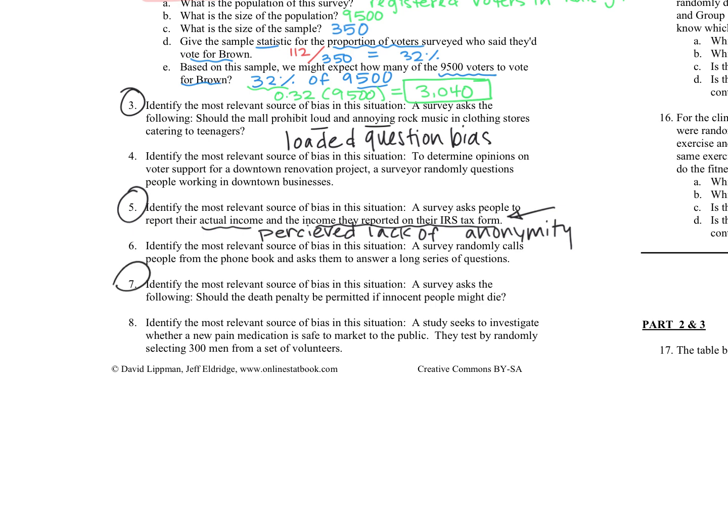For question number seven, identify the most relevant source, again, of bias. A survey asked the following, should the death penalty be permitted if innocent people might die? That one also, it's really focusing in on the innocent people might die. And I would say that that would be a leading question, as opposed to just asking if the death penalty should be permitted. And again, sometimes people say loaded question. So leading question bias or loaded question bias.